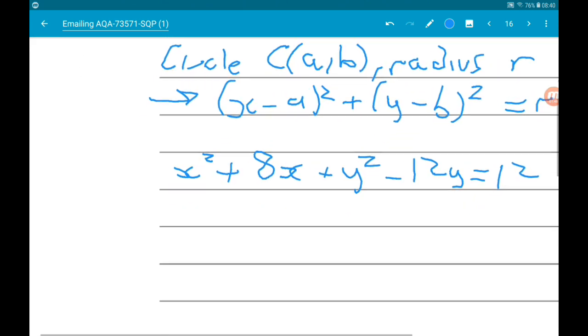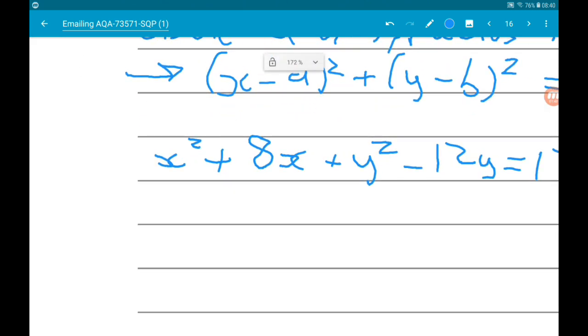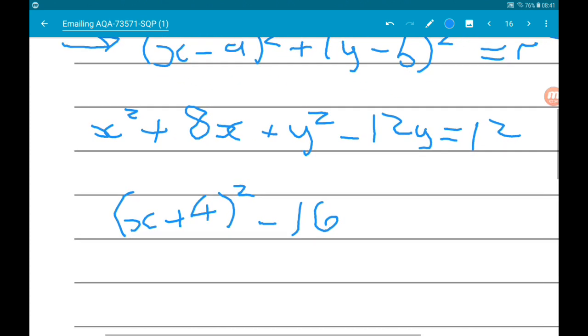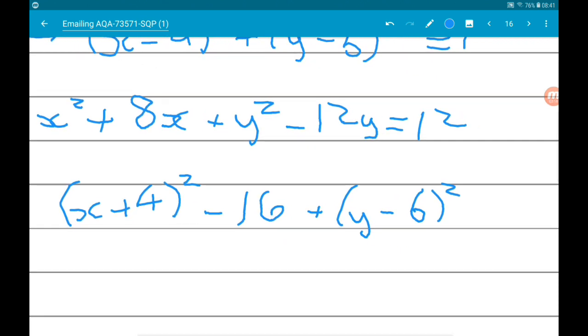So x squared plus 8x is going to be x plus 4 squared minus 16. And then y squared minus 12y is y minus 6 squared minus 36.